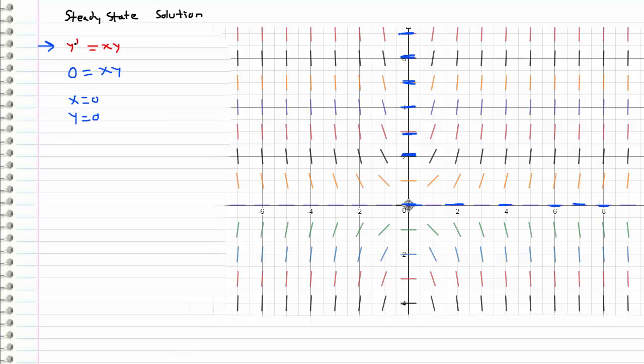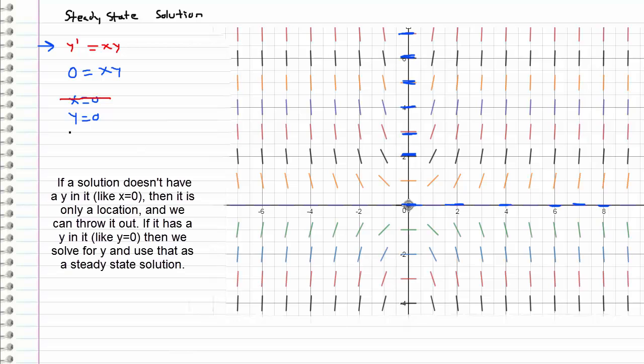Remember that we are looking for a steady state solution, which means we're looking for a function y that causes us to have 0 slope. We're not interested in x equals 0 because that's just a location—it's only at a single location. We're interested in an actual function that gives us a steady state solution, which is y equals 0.